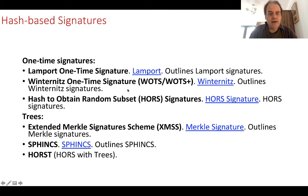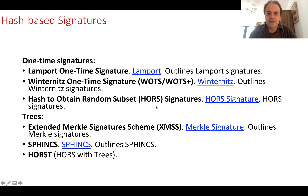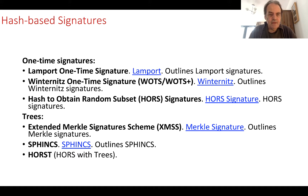Some of the methods we have are the Lamport one-time signature, WOTS, and WOTS+. We'll also look at HORSE signatures. These are one-time signatures, but we can build them within trees to create signatures which can be used multiple times. These include the Extended Merkle Signature Scheme, SPHINCS, and HORST.